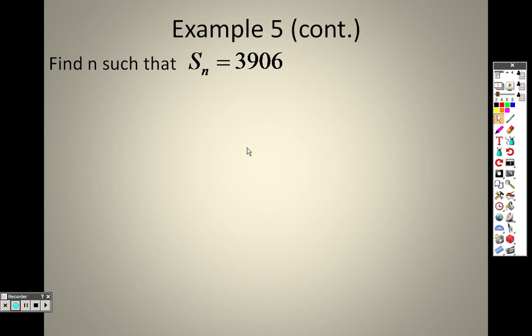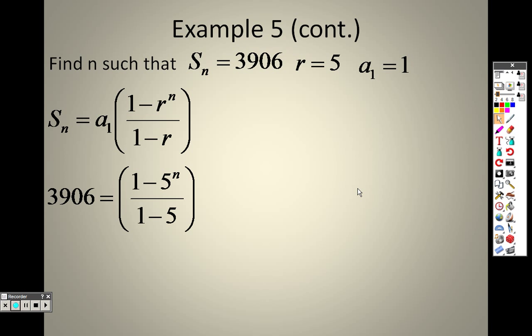So now what they're saying is what if I give you the sum, right? What if I'm telling you what the sum is, and I'm telling you that r is 5, and I'm telling you that the first term is 1, so we're using the same example. Let's figure out what n is. So what is the number of terms that you have to add together to get that number right there? Well, since it's s of n, and they're saying that the sum is 3,906, I have that plugged in there.